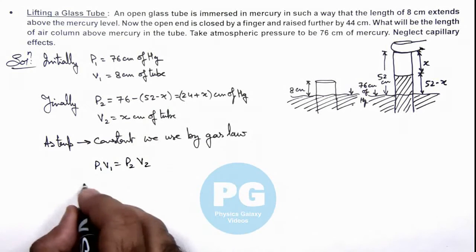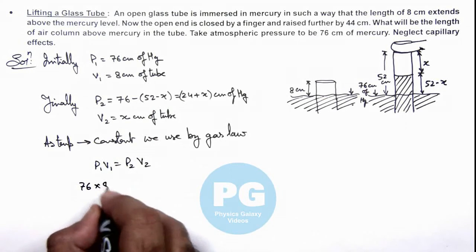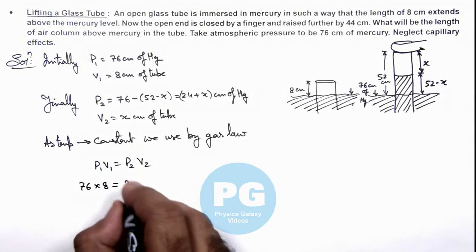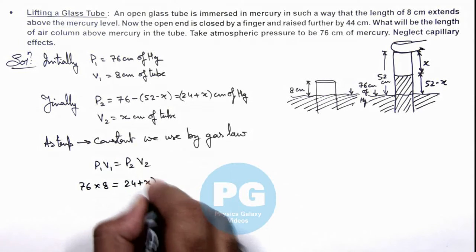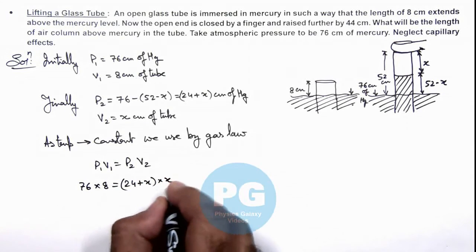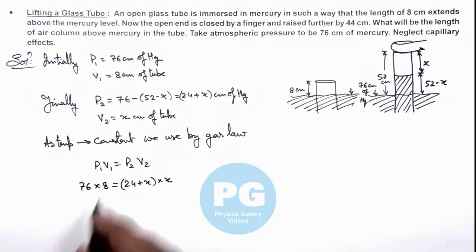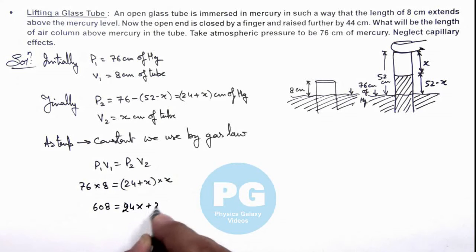On substituting, this gives us 76 multiplied by 8 equals 24 plus x multiplied by x. On simplifying this gives us 608 equals 24x plus x squared, or x squared plus 24x minus 608 equals zero.